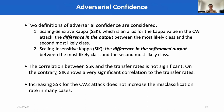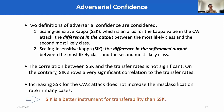We consider adversarial confidence as well. Two different definitions of adversarial confidence are considered. The first one is called scaling-sensitive kappa (SSK), which is exactly the same kappa value defined in the CW attack. We also consider scaling-insensitive kappa (SNK), which is defined as the difference in the softmax output between the most likely class and the second most likely class. The experimental results show that the correlation between SSK and the transfer rates is not significant. On the contrary, SNK shows a very significant correlation to transfer rates. In addition, we also observed that increasing SSK for the CW attack does not increase the transfer rates in many cases, which is opposite to the original paper's conclusion in lab environments. Therefore, we conclude that in our real transfer attack, SNK is a better instrument for transferability than SSK.